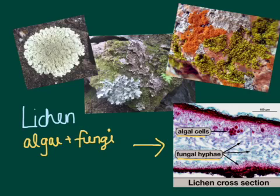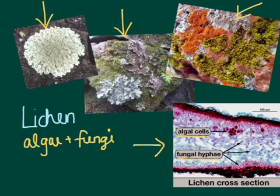Lichen can be different colors, and you've probably seen it growing on the sides of rocks or on the sides of trees, just like this. It's a very important pioneer species in primary succession because it's basically able to start creating soil out of rock.